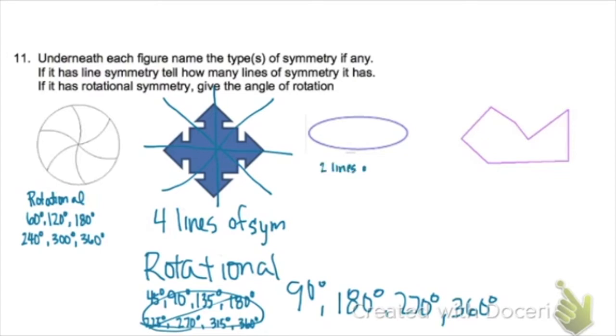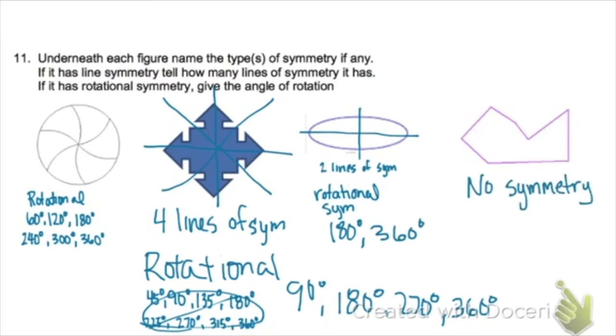This next one has two lines of symmetry, and it has rotational symmetry of 180 degrees and 360 degrees. And this last one has no symmetry.